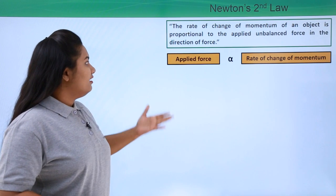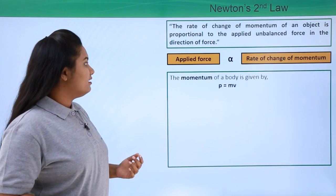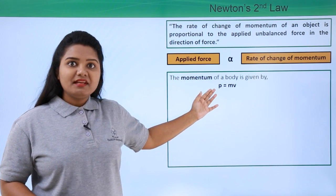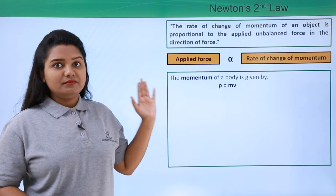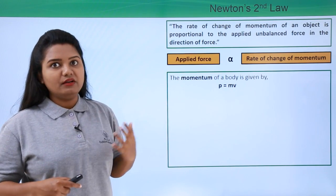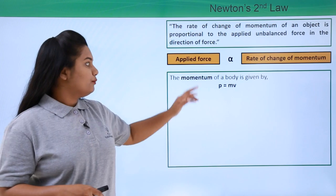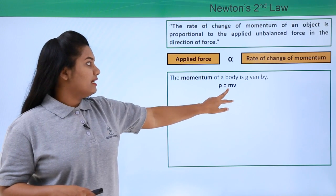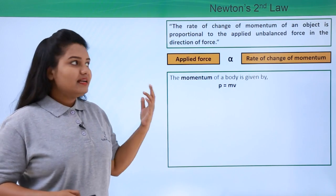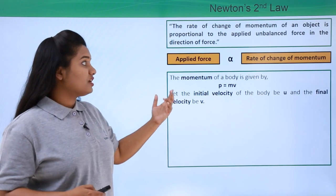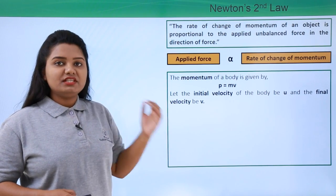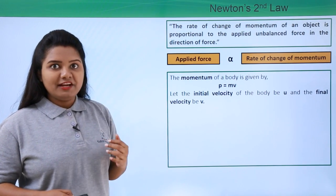Now let us take the momentum of the body to be p. We know that the formula of momentum is mass into velocity, so p = mv. Now let's say there has been a change in the velocity of the body, which leads to a change in momentum.